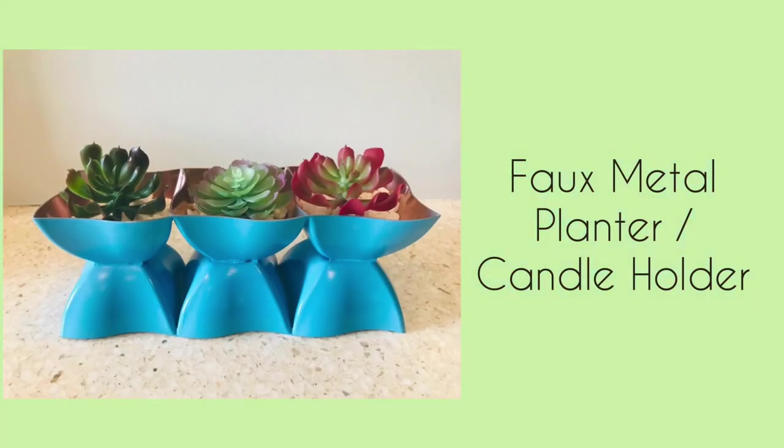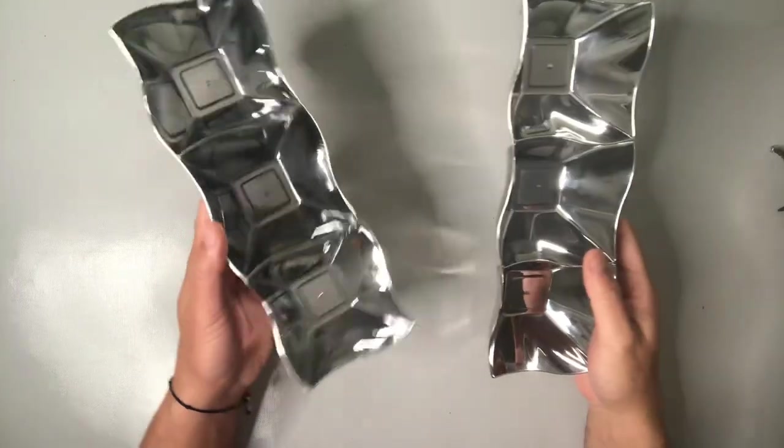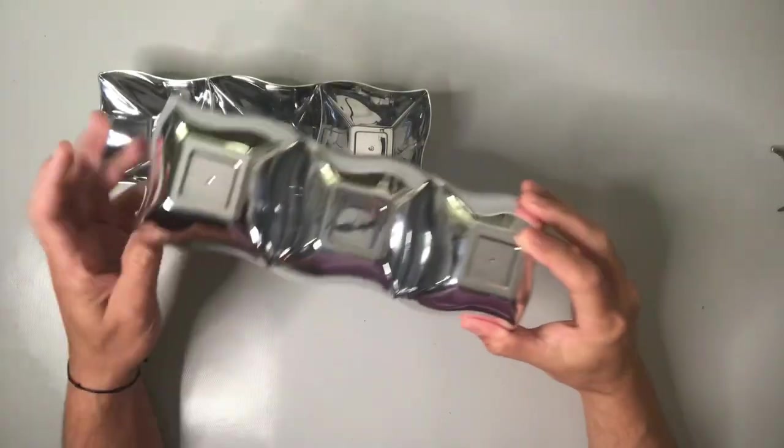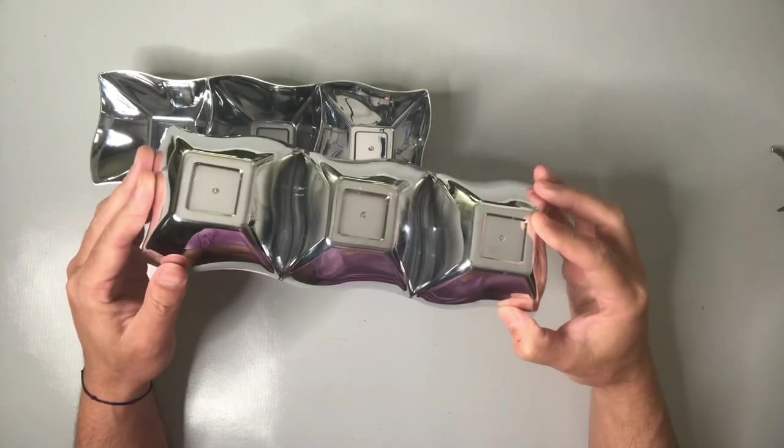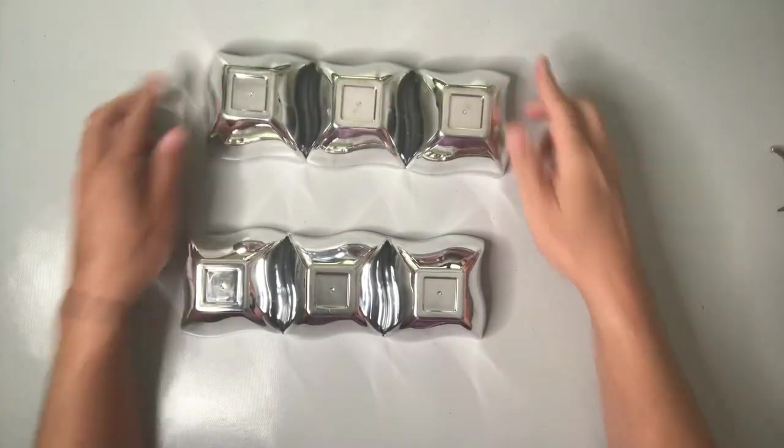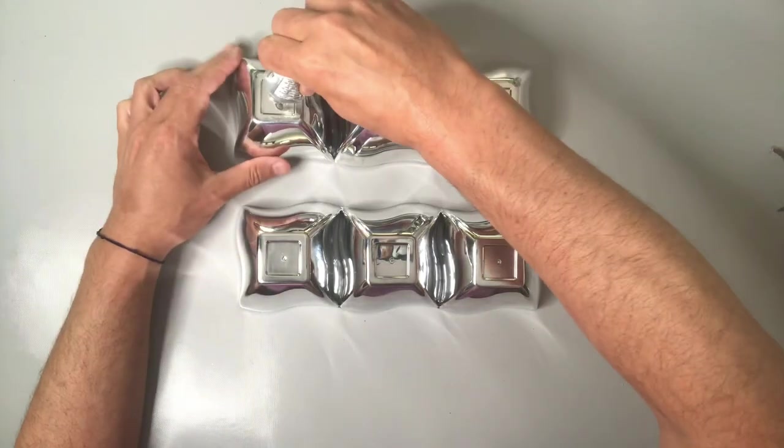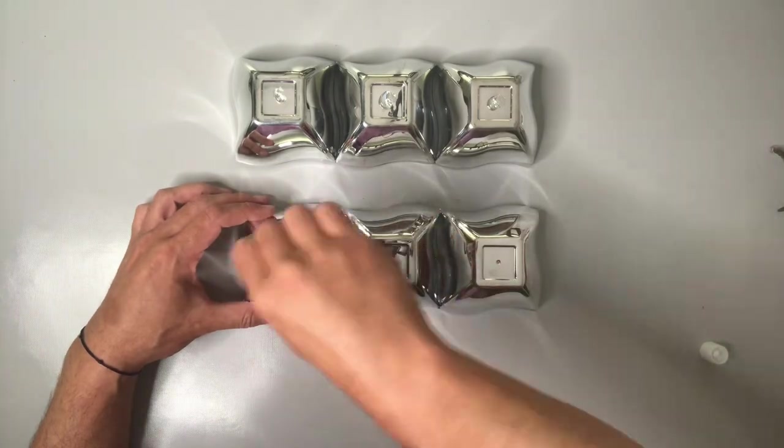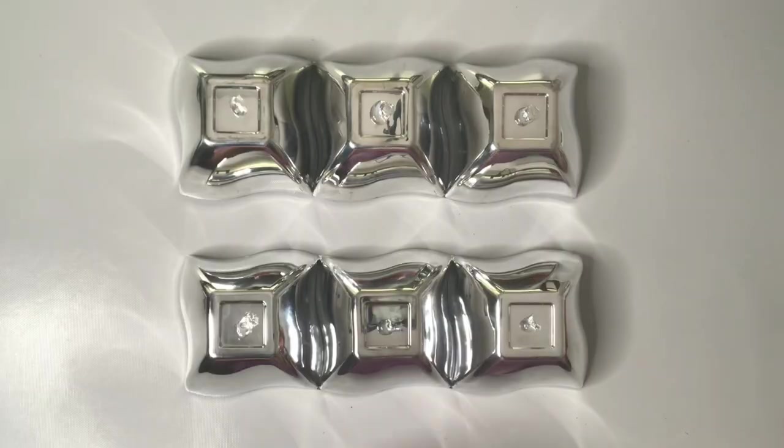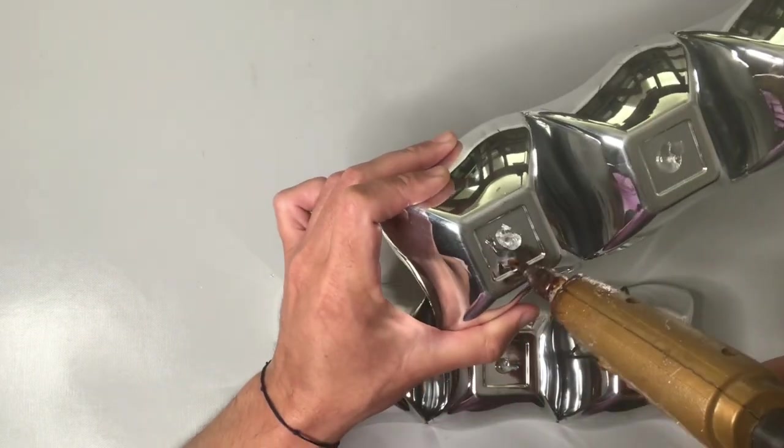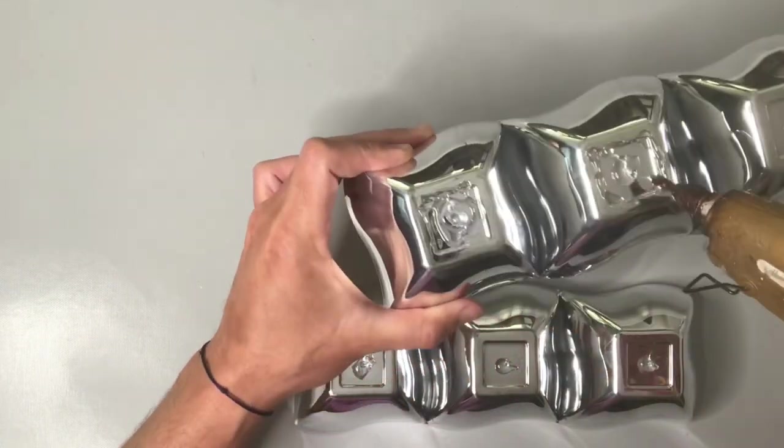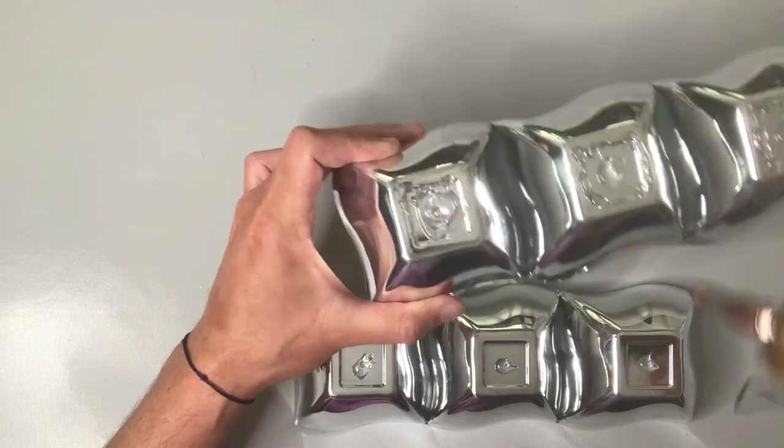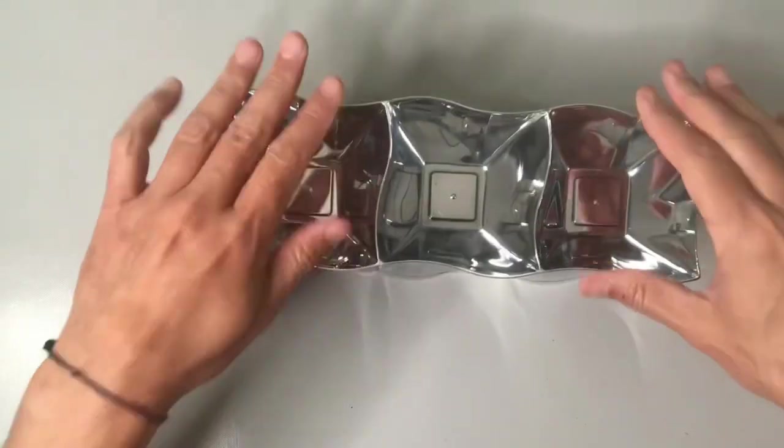This DIY project is a faux metal planter slash candle holder. I really love the colorful and metallic effects that I get from this one. And to start, we have this container that I got from that catering section at Dollar Tree. It has three containers kind of attached together in this chrome type of finish, although it is made out of plastic. I'm just going to join these two pieces together, putting some E6000 glue on both of the bottoms, and using some hot glue as well for the temporary hold.